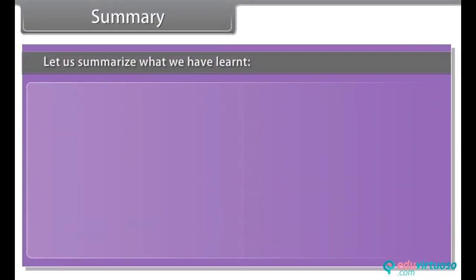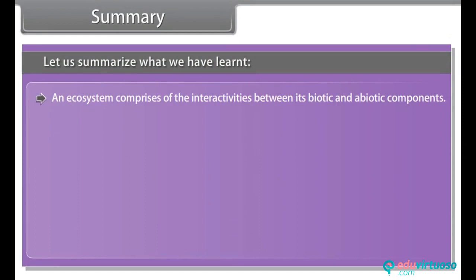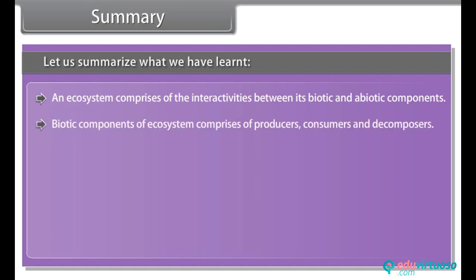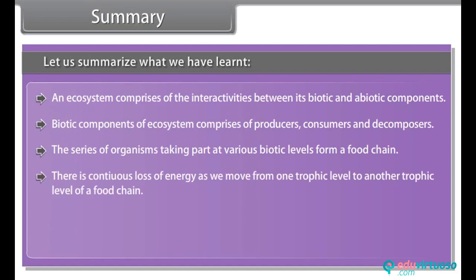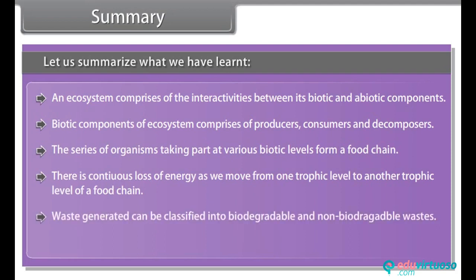Let us summarize what we have learnt. An ecosystem comprises the interactions between its biotic and abiotic components. Biotic components include producers, consumers and decomposers. The series of organisms at various trophic levels forms a food chain, with continuous loss of energy as we move from one trophic level to another. Waste generated can be classified into biodegradable and non-biodegradable wastes. The use of chemicals like CFCs is causing ozone depletion.